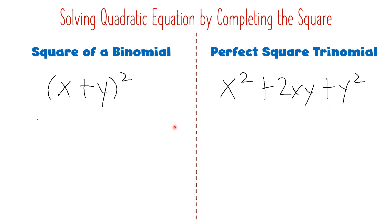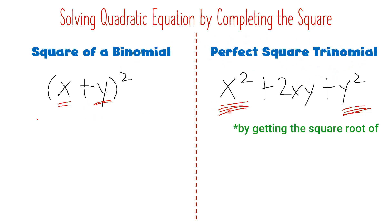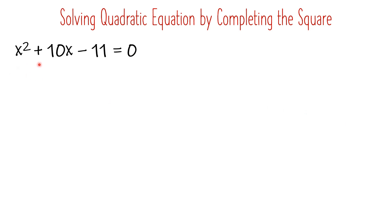Now, if we reverse it — from a perfect square trinomial, how can we obtain the square of a binomial? We can do that by getting the square root of the first and last terms. Square root of x² is x; square root of the last term is y. And that's what we're going to do later on. We will first write the equation as a perfect square trinomial, then make it a square of a binomial.